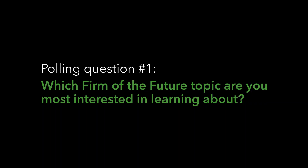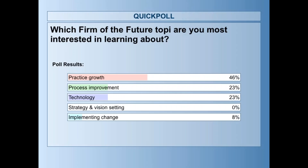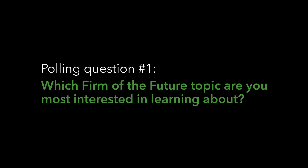This webinar is for CPE — we do have a credit available. Let's launch that first poll. The firmofthefuture.com website is fantastic and they're updating content daily. What of the five different groups of information would you like to see more of? Practice growth, process improvement, technology, strategy, vision setting, and implementing change. The results show a lot of interest in practice growth first; second, tied with process improvement and technology. Strategy and vision setting were not as highly voted. We've got three more polling sections as we go.